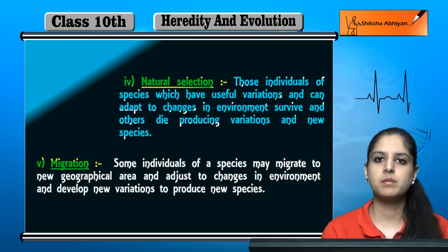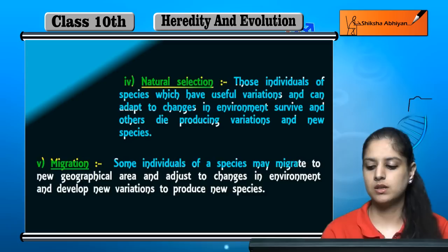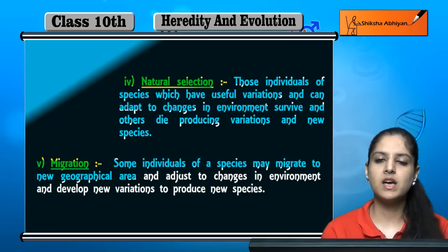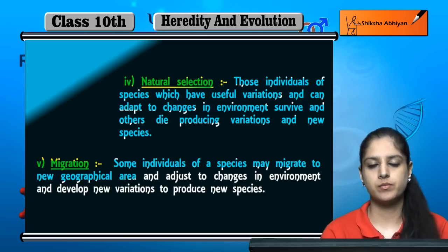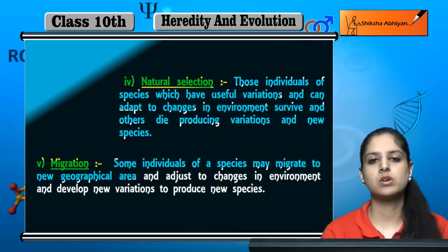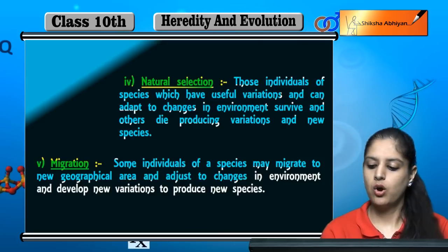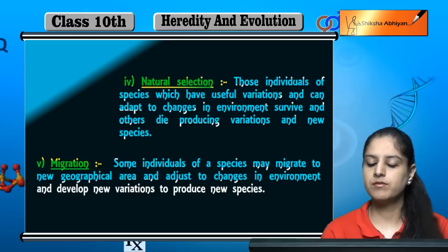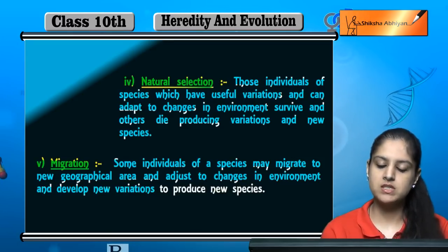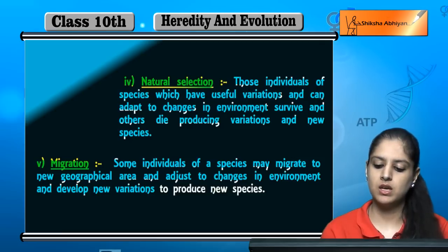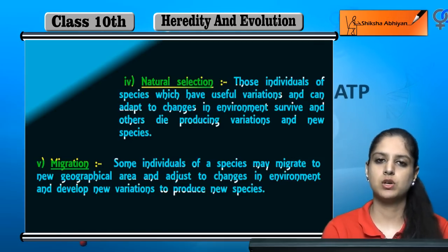Next is migration. Some individuals of a species have migrated to a new geographical area. They adjust to environmental changes in that new area, produce new variations, and ultimately new species are produced.